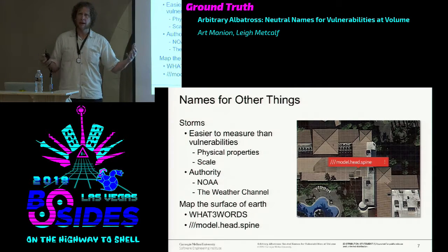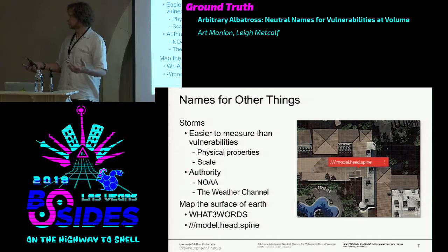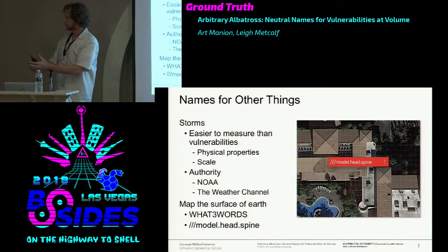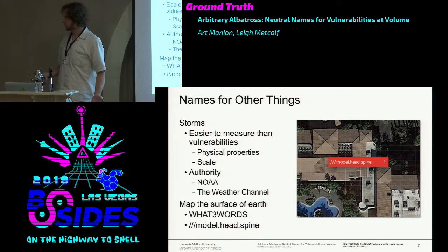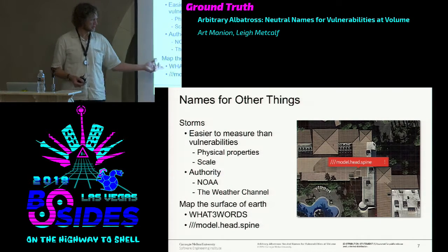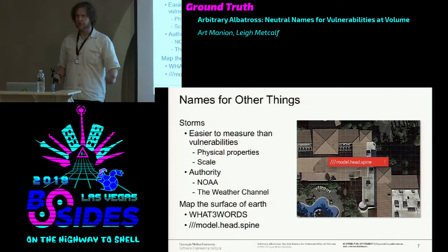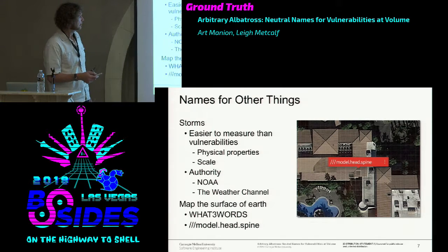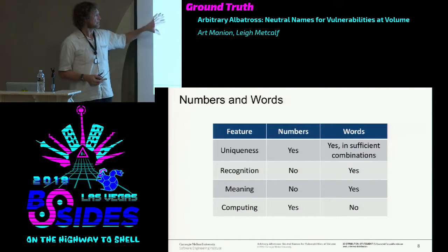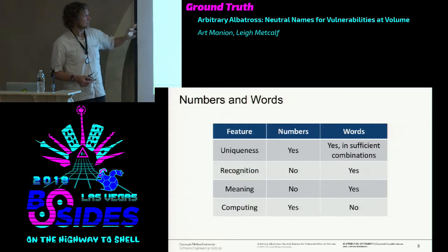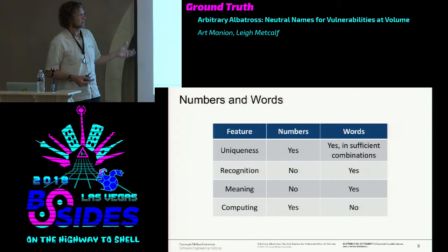Three-meter squares. How much surface area of the globe is there? There are enough three-word combinations to cover the entire thing. Numbers can be unique; if you have enough words, you can be unique about things. Recognition is not great for humans with numbers unless it spells out LEET or is your old phone number. Computers like numbers and cataloging, but have to do NLP processing to deal with words.